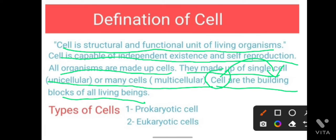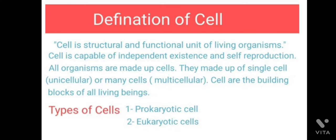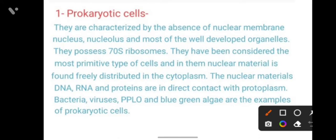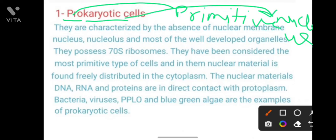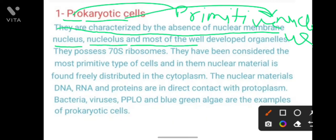What are the cell types? Cells are mainly of two types: prokaryotic cells and eukaryotic cells. Prokaryotic cells are characterized by the absence of a nuclear membrane, nucleus, and nucleolus, and most well-developed organelles are absent.